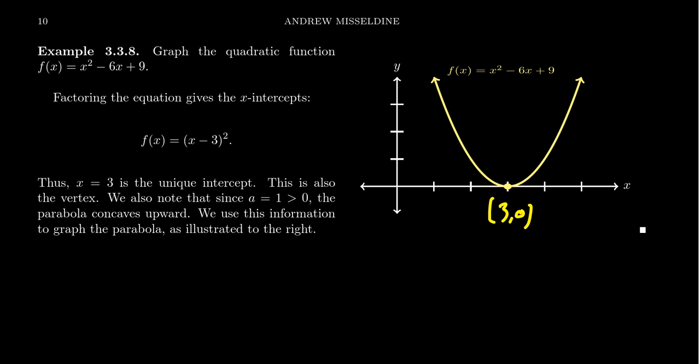You need another point to determine what's going on here. We could use the leading coefficient to help us out a little bit. a equals 1, which is positive. This tells us the graph concaves up. So the picture has to be something above the x-axis. That is useful.